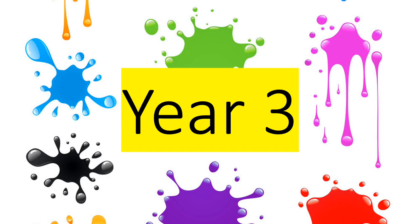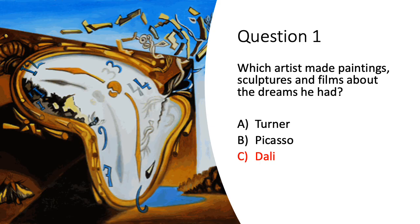On to year three answers for our artists. Question one: which artist made paintings, sculptures and films about the dreams he had? That was Dali. As you can see in the painting on the left-hand side, he painted melting clocks, floating eyes, clouds that looked like faces and rocks that looked like bodies.